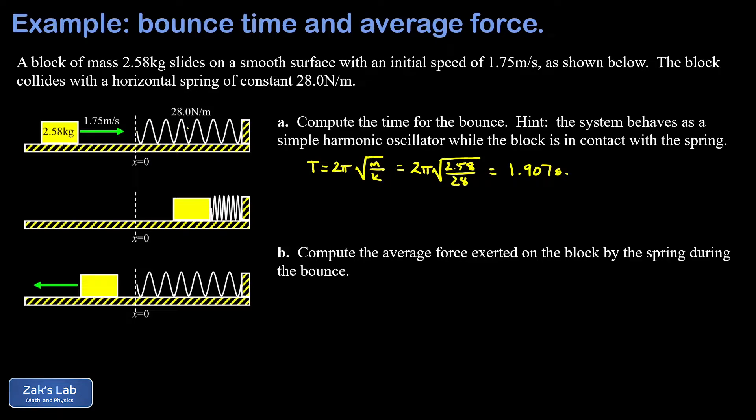That would be all the way from the equilibrium position to full compression to full extension back to equilibrium. What we're looking at in this problem is actually just one half of a period - we go from equilibrium to full compression back to equilibrium. So we need one half that period and when we run the numbers we get 0.954 seconds.